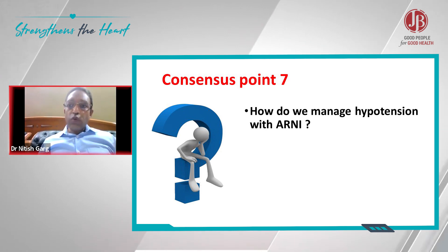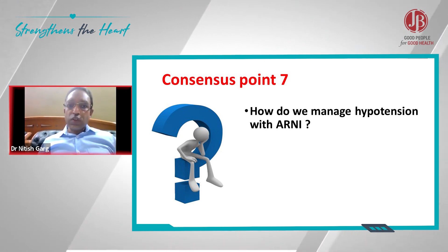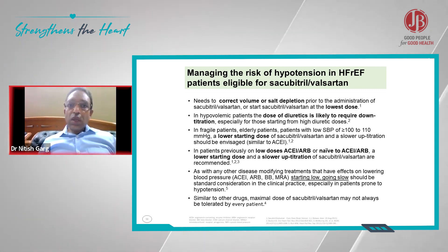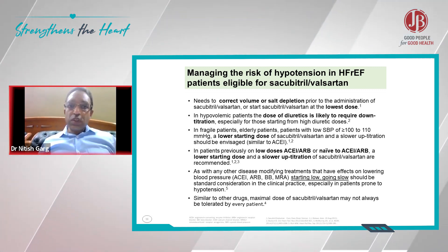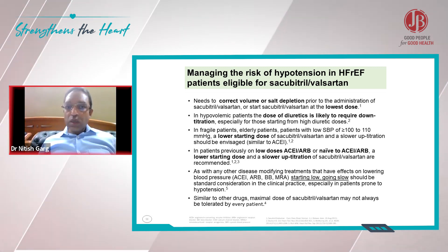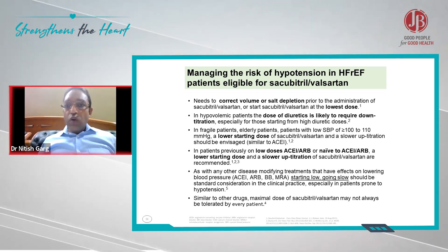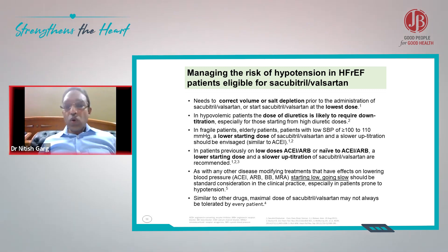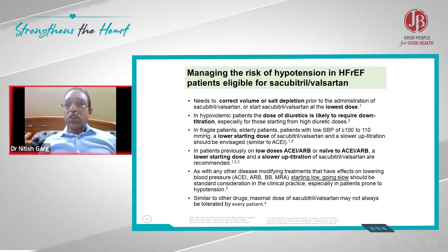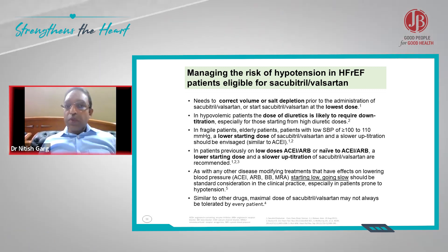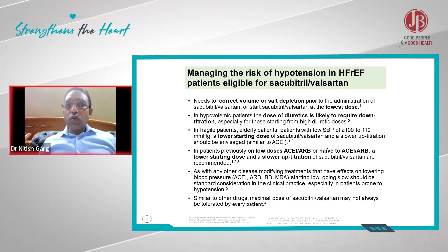The seventh point is how do we manage hypotension with ARNI. Managing the risk of hypotension in eligible patients: we need to correct the volume and salt depletion, and start at a lower dose of diuretics. Higher doses are likely to cause hypovolemia and low blood pressure.